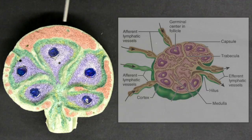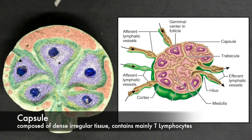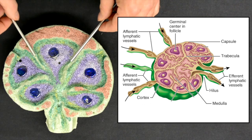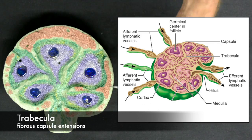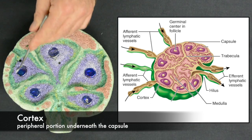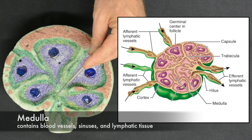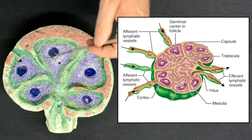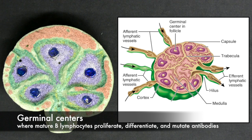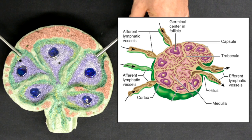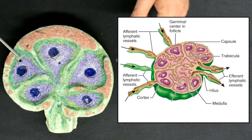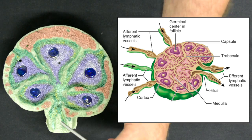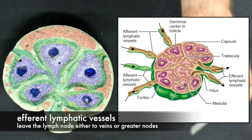The lymph node has an outer fibrous capsule and then there are several indentations called trabeculae. There is an outer cortex and an inner medulla. And then these blue buttons represent the germinal centers. Generally, there are several afferent lymphatic vessels that drain fluid from the interstitial space entering the lymph node. And at the hilum, there is one efferent vessel carrying fluid away.